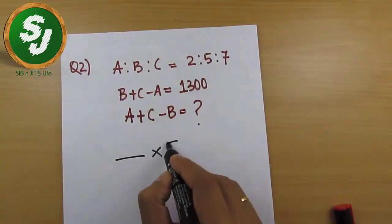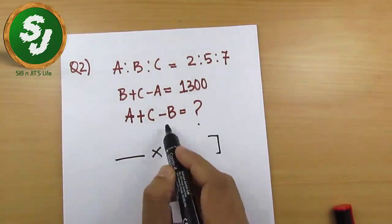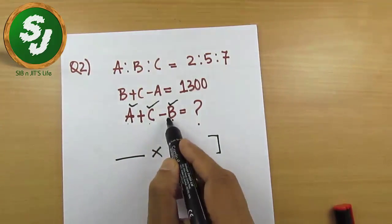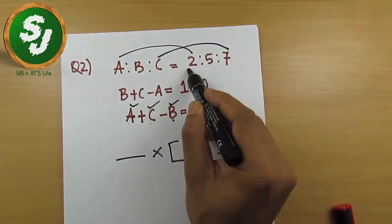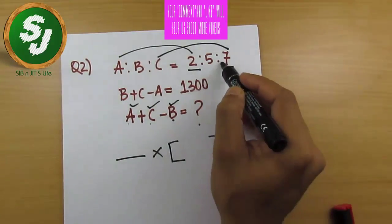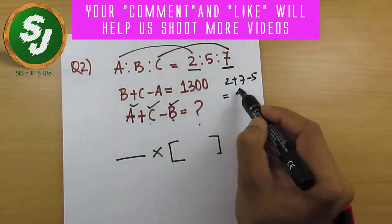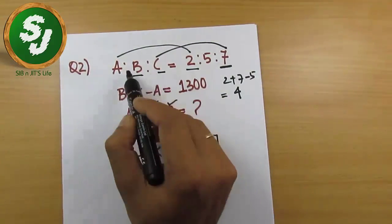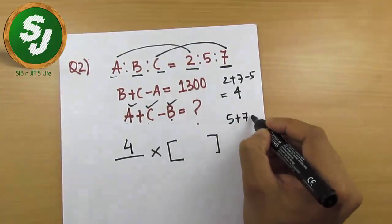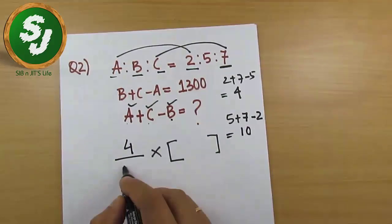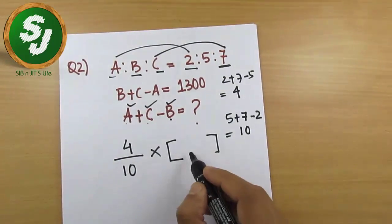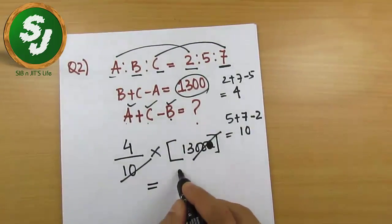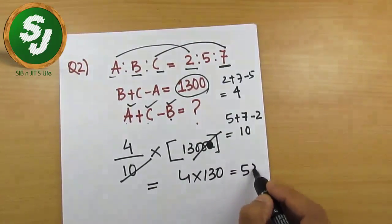Whatever is asked goes on top, so a plus c minus b goes in the numerator. A plus c minus b means 2 plus 7 minus 5, which equals 4. So 4 is on top. On the denominator, the given expression is b plus c minus a, so 5 plus 7 minus 2 equals 10. The given number is 1,300. So the final answer is 4 over 10 into 1,300, which equals 520.